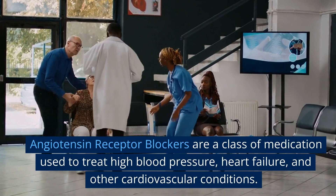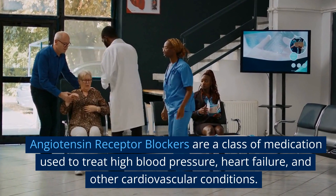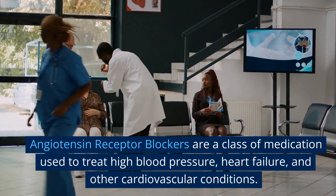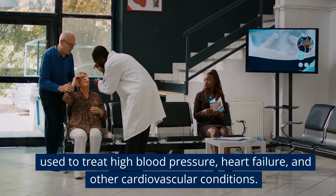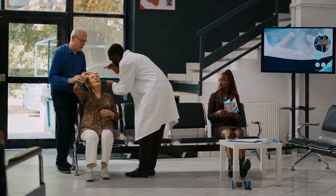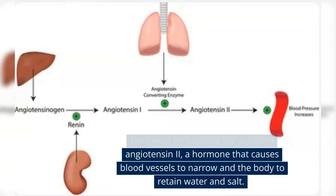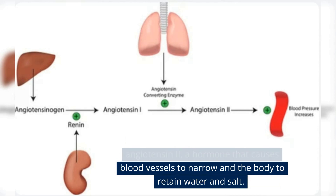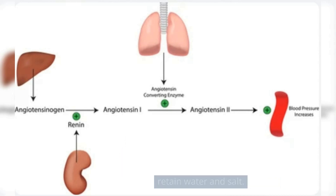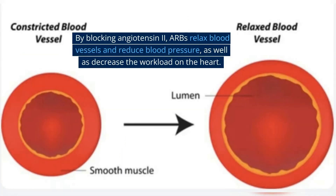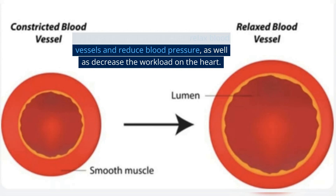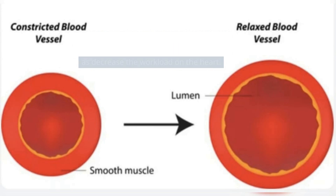Angiotensin receptor blockers are a class of medication used to treat high blood pressure, heart failure, and other cardiovascular conditions. They work by blocking the action of angiotensin-2, a hormone that causes blood vessels to narrow and the body to retain water and salt. By blocking angiotensin-2, ARBs relax blood vessels and reduce blood pressure, as well as decrease the workload on the heart.